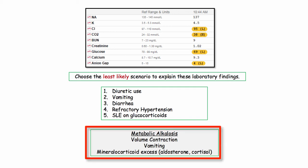Here are the choices. Volume contraction, vomiting, or mineralocorticoid excess. I use the term mineralocorticoid excess to describe both aldosterone and cortisol, as cortisol, in high concentration, has the same mineralocorticoid properties as aldosterone. So these are the causes. That's it. Mercifully straightforward.